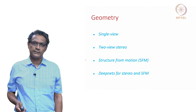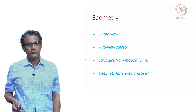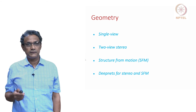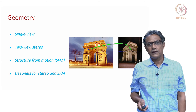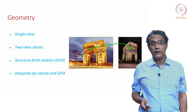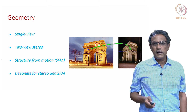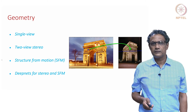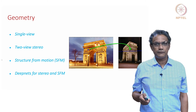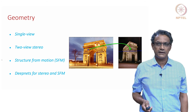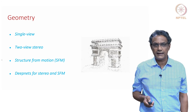Geometry is about how far a point is from the camera and so on — what are all the points in a scene, what are all the different objects, and where they are with respect to the camera. Here is an example where you have a building on the left and the same building on the right taken from a completely different viewpoint, and you want to match feature points across these two images in order to triangulate and find where each point is. If you do that correctly, you will get a dense point cloud.